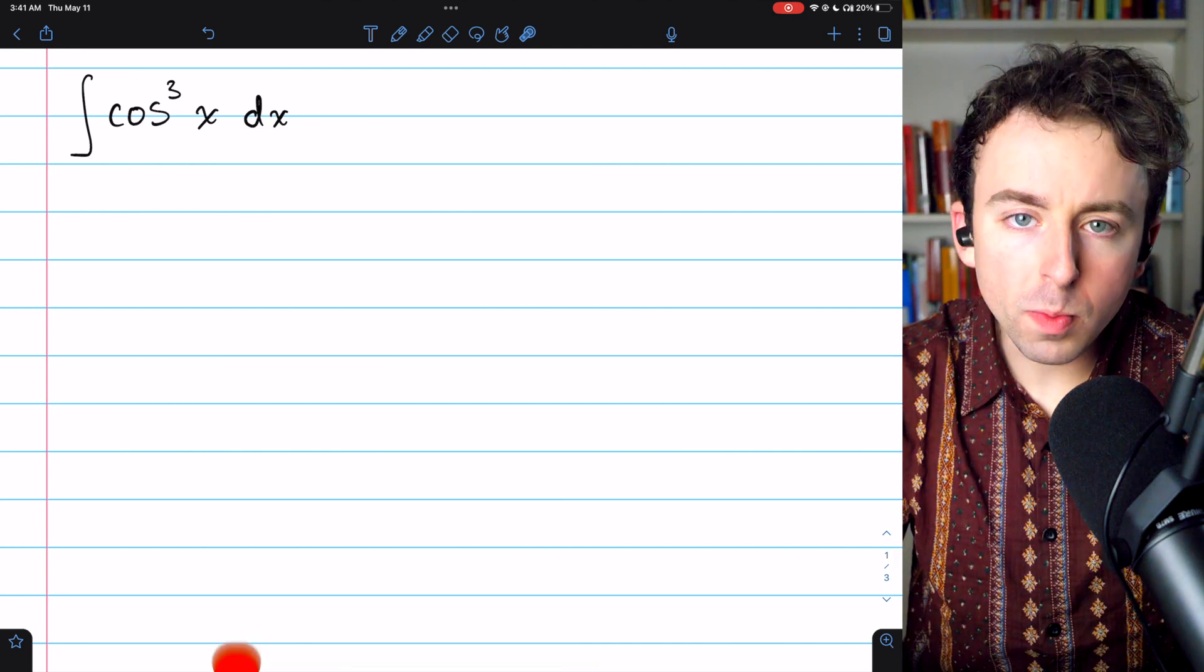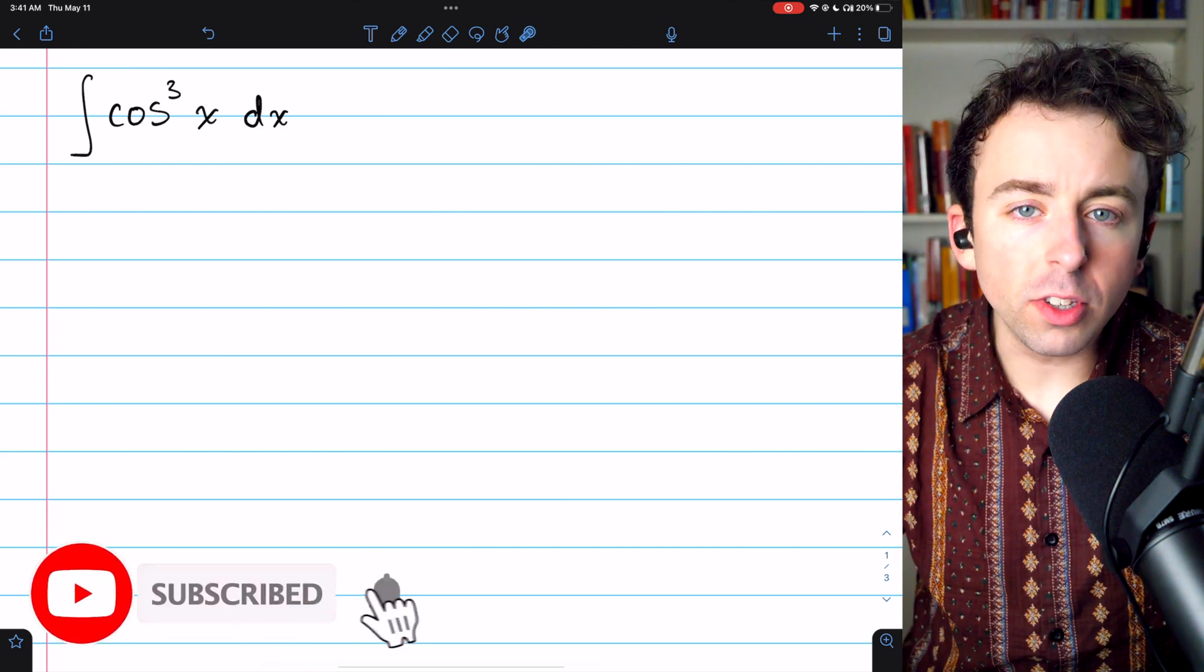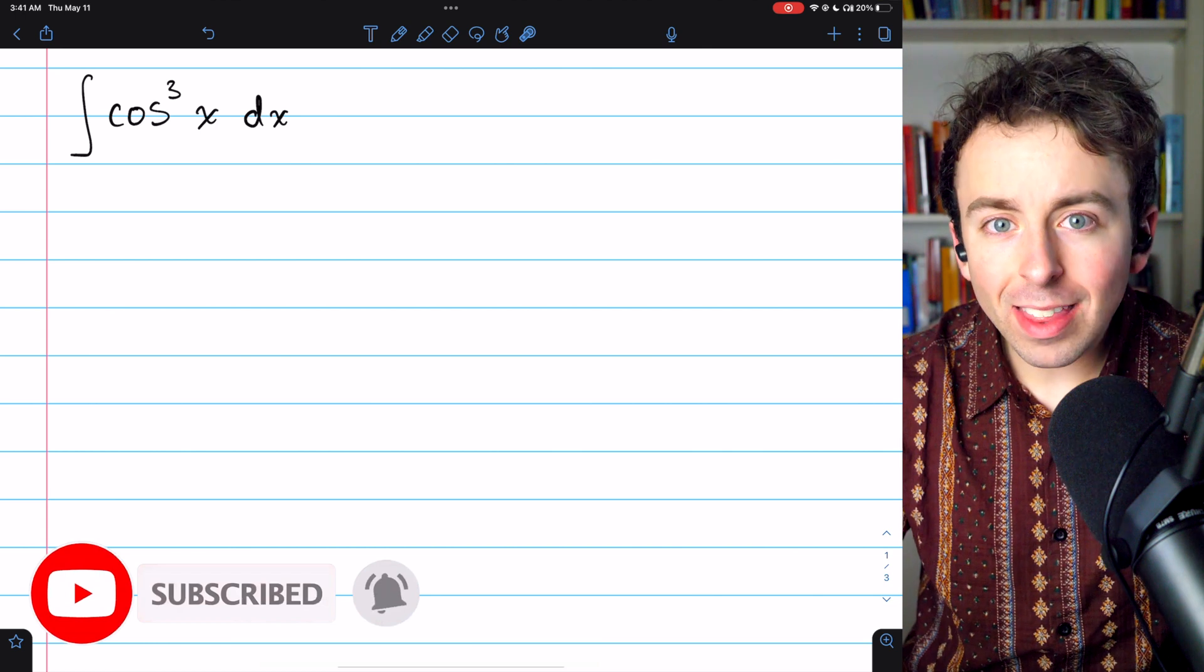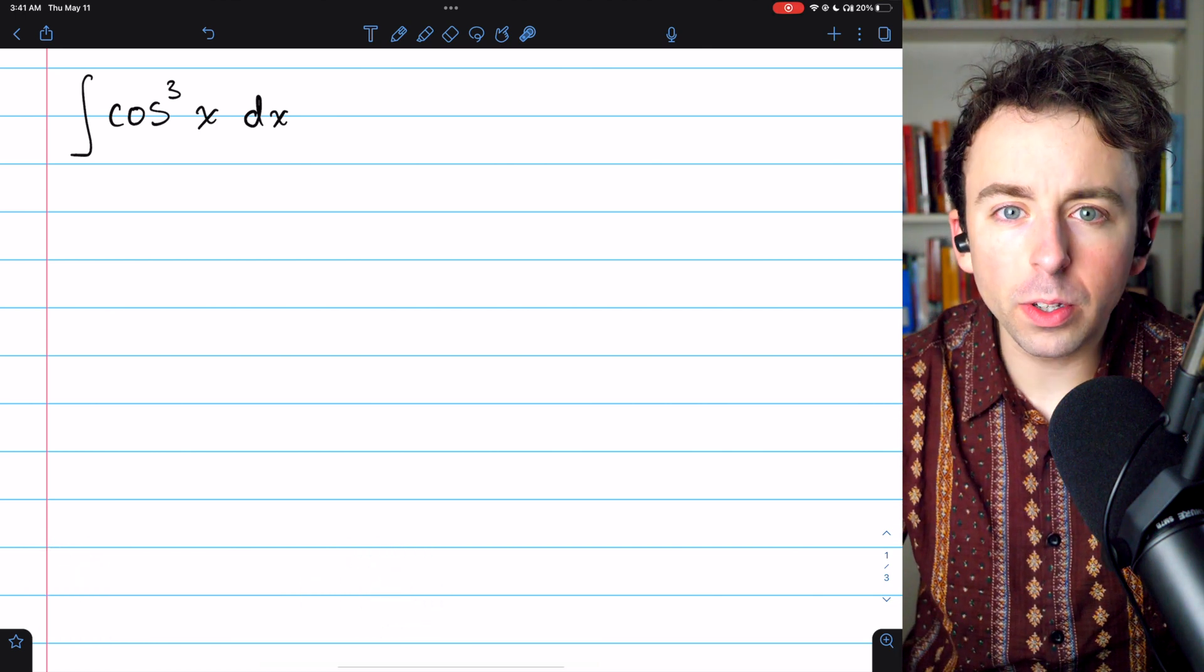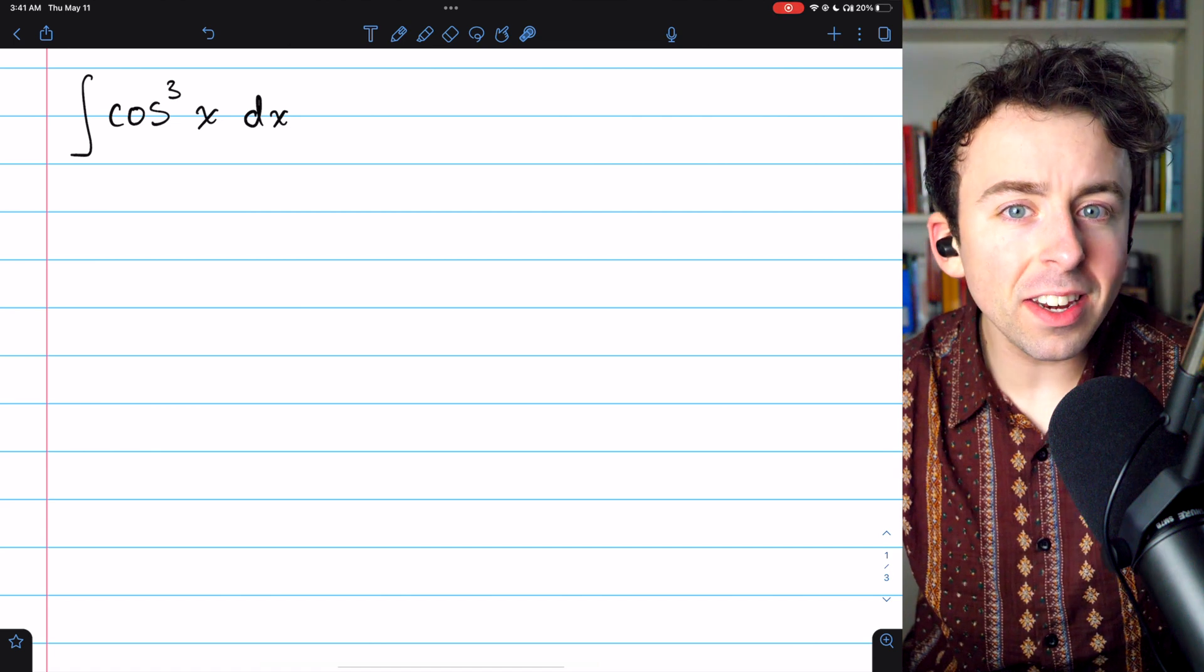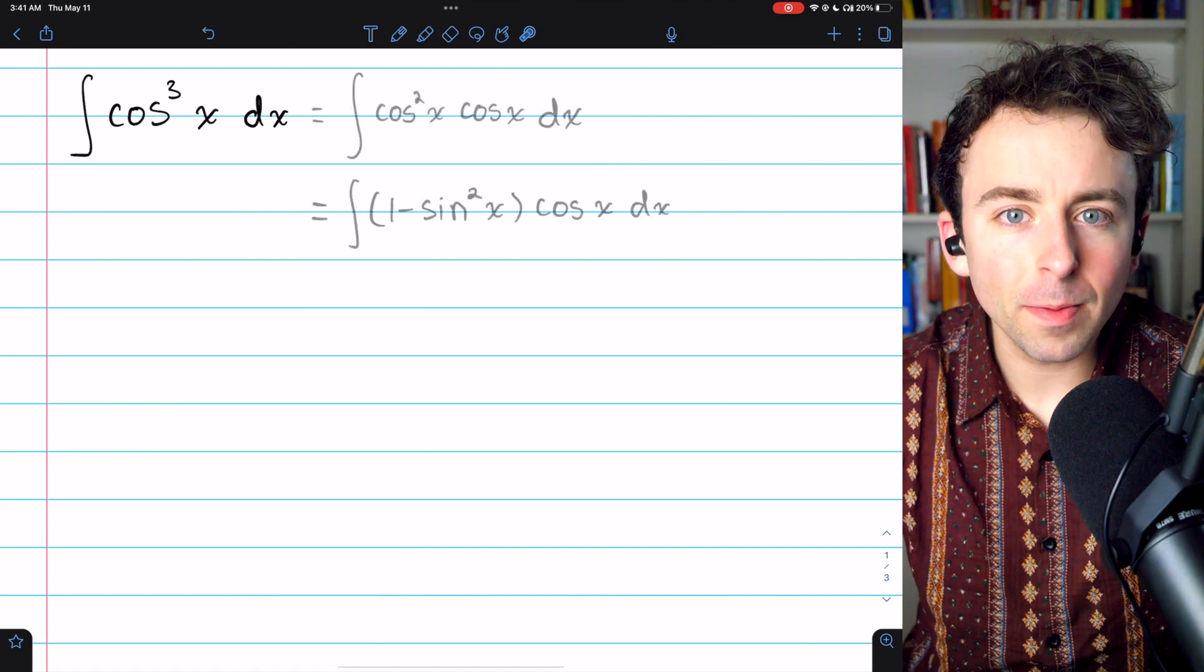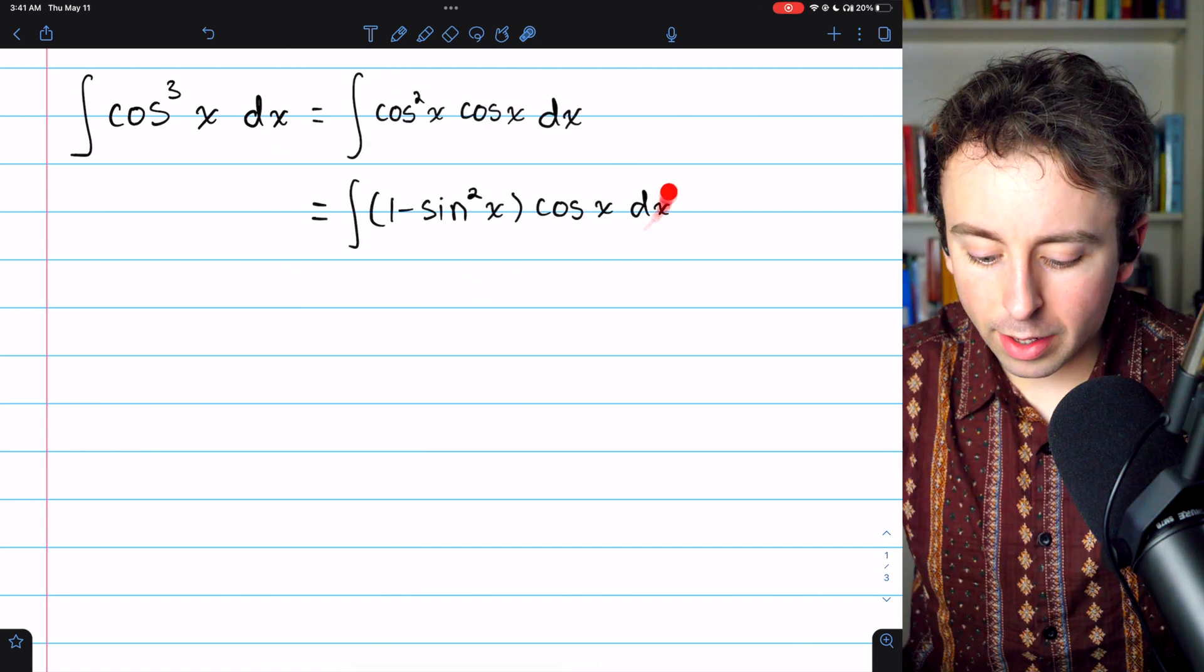To integrate cosine cubed of x, we'll need to use u substitution, but to make that possible, we'll have to take two factors of cosine out, that's a cosine squared, and then use the Pythagorean identity. And that works out just like this.